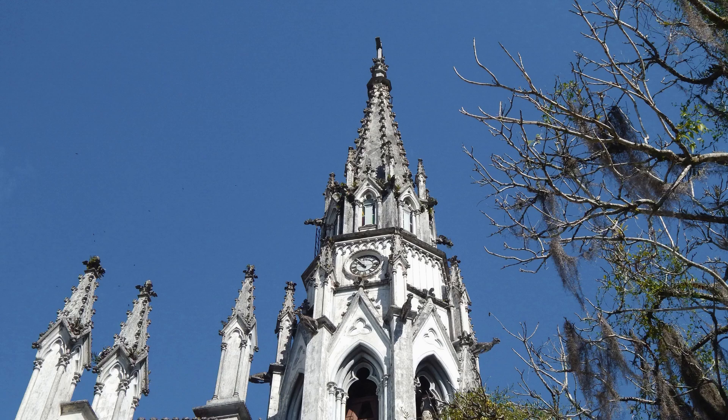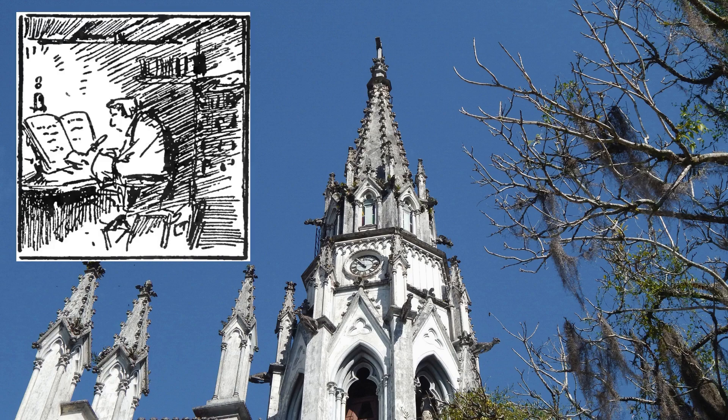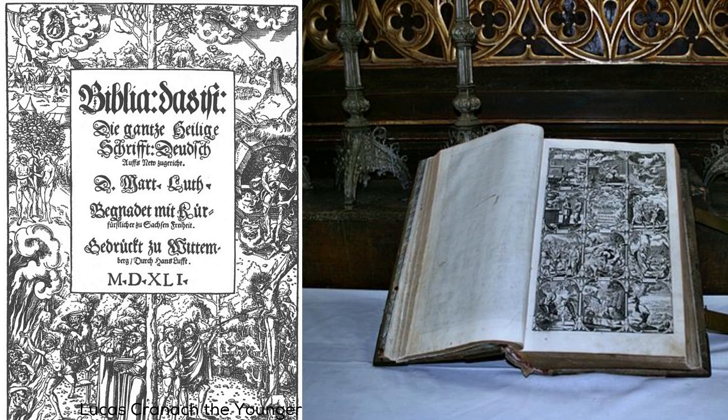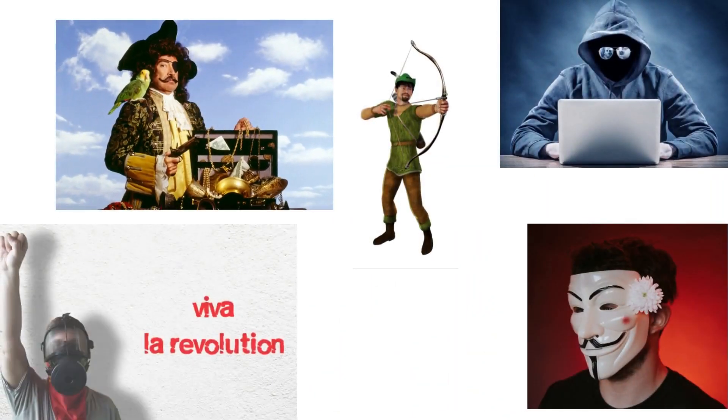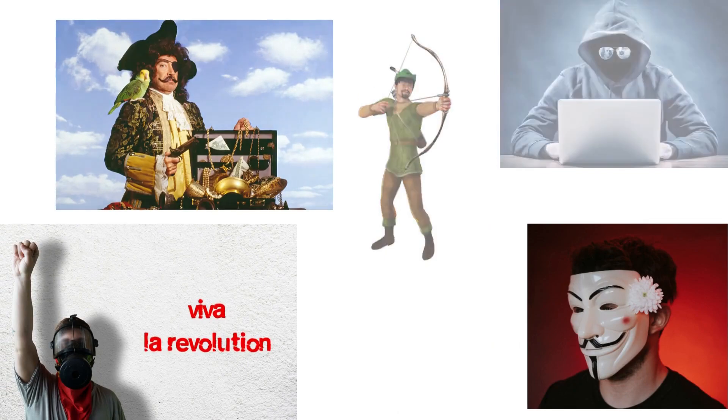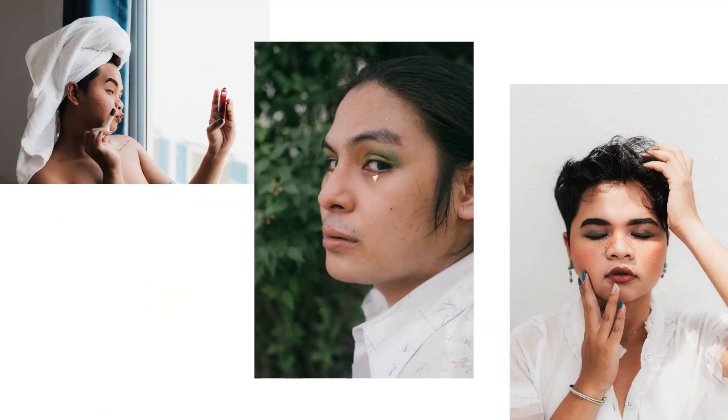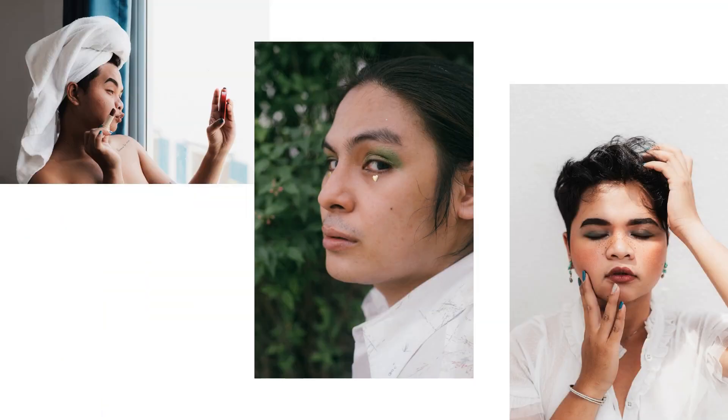In Germany, the dialect into which Martin Luther translated the Bible became High German. An argot is a language spoken by a minority that is persecuted or discriminated against, or by people under pressure from law enforcement, such as criminal gangs or rebel groups. The whole point of argot is to keep non-group members from understanding group members. A good example is gay lingo in the Philippines.